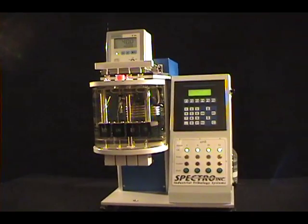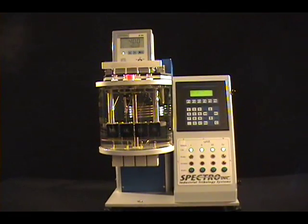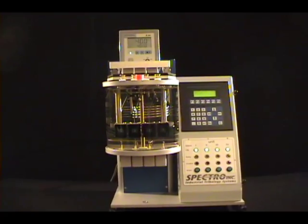The entire measurement cycle, including cleaning, takes three to four minutes, making the Spectra Visc ideal for a high capacity measurement facility.